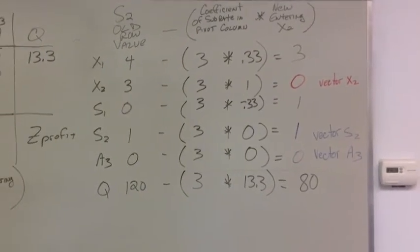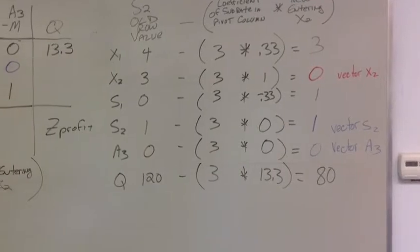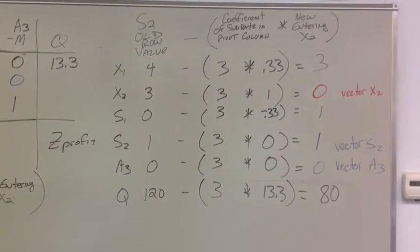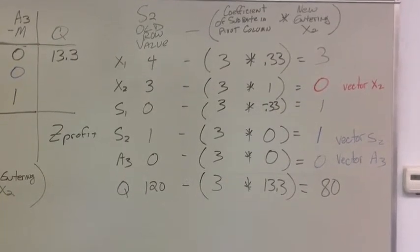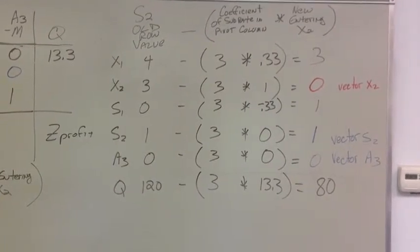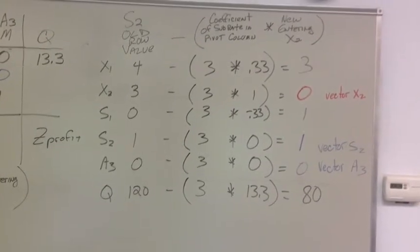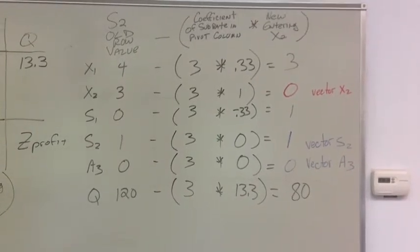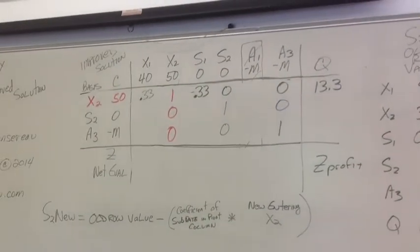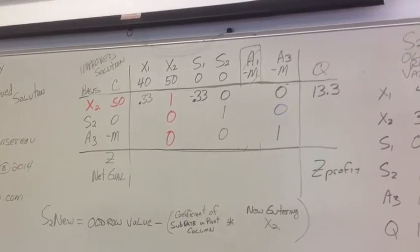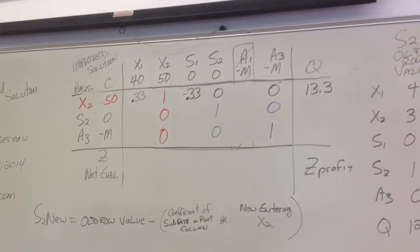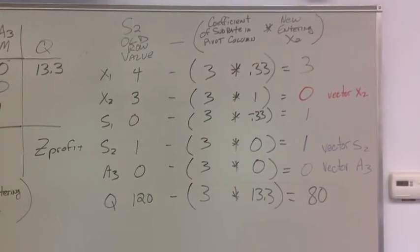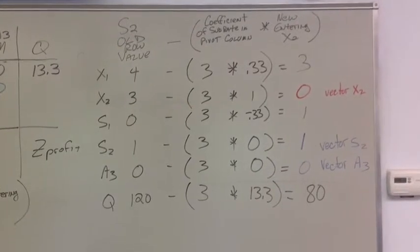But the old s2, so it was 4x1 plus 3x2 plus 0s1 plus 1s2 plus 0s3, and the cube was 120, so that's my old values. The coefficient in the subrate was 3. The new entering x2 is down here, and we can look across. It's right there, 0.3, 1, negative 0.33, 0, 0, and 13.3. You notice right here. And that gives me the new values of 3, 0, 1, 1, 0, and 80.